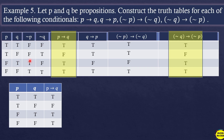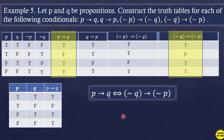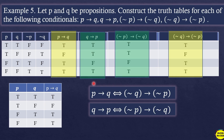Observing the truth table, the fifth column (p→q) and the eighth column (¬q→¬p) have the same truth values. Therefore, 'if p then q' is equivalent to 'if not q then not p'. And 'if q then p' is also equivalent to 'if not p then not q' — they share the same truth values, so they are logically equivalent.